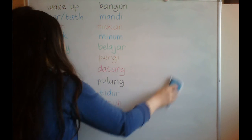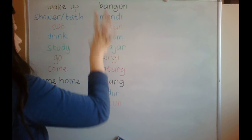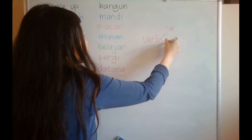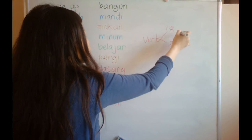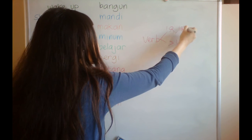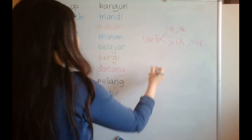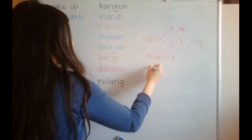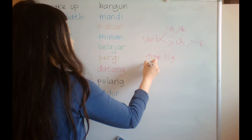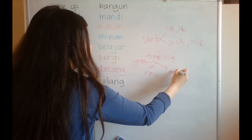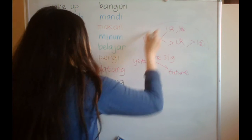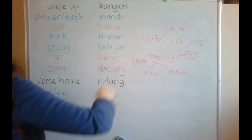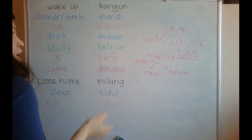In Indonesian language, they don't have differences in the verb for one person or more than one person, for an object consisting of one or more than one. The verb for I, you, we, they, he, she — is the same.